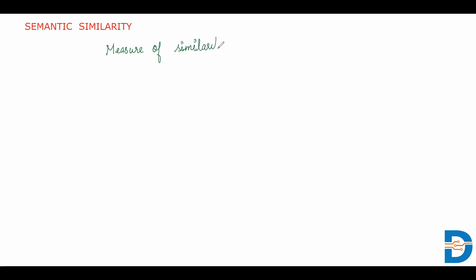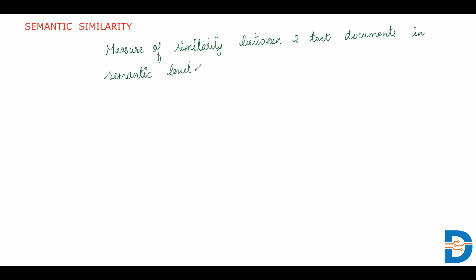So semantic similarity is a measure of similarity between two text documents at their semantic level. If you look into the meaning of the sentences and try to find the similarity between them, we call it semantic similarity. On the other hand, if you just look into the words to see how identical two sentences are, then it is called lexical similarity. Let me show you that with an example.